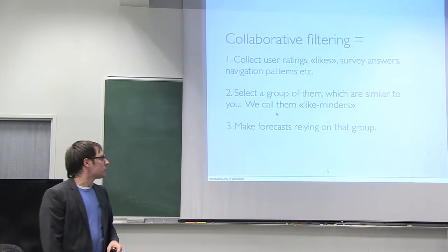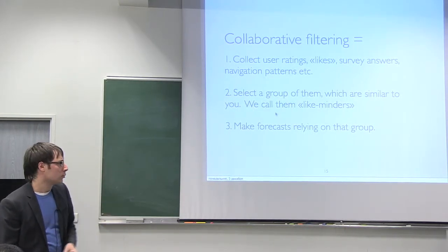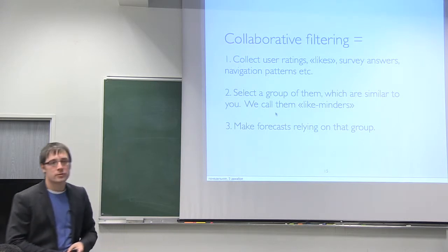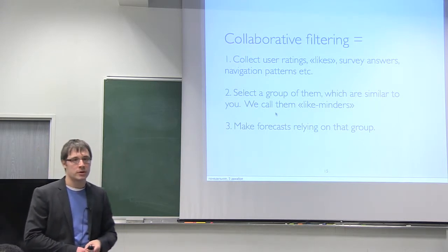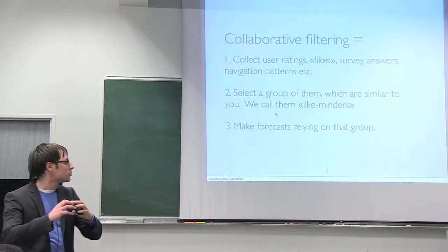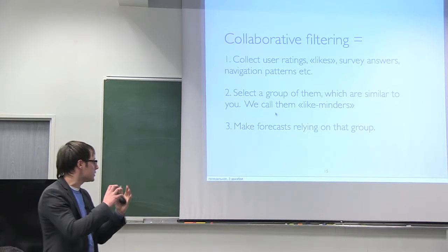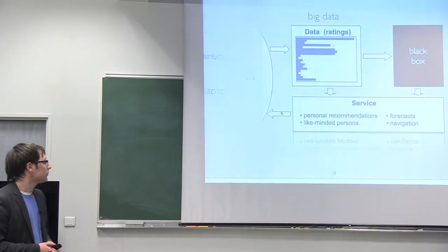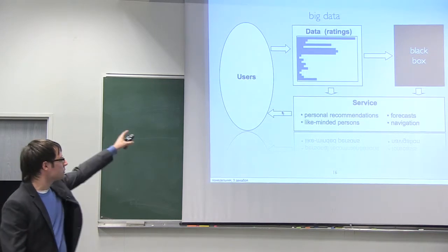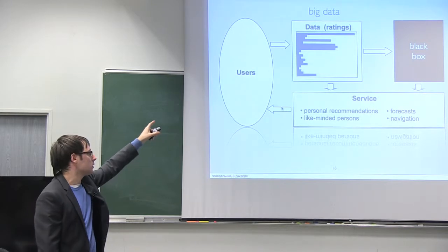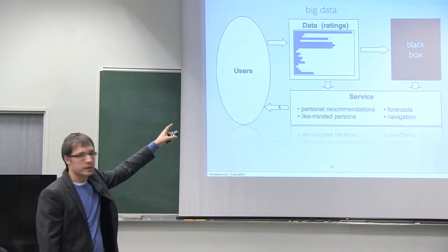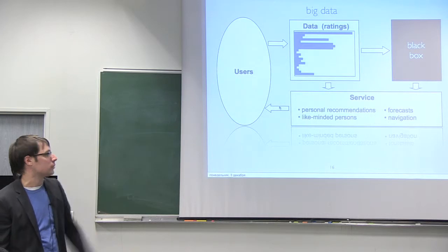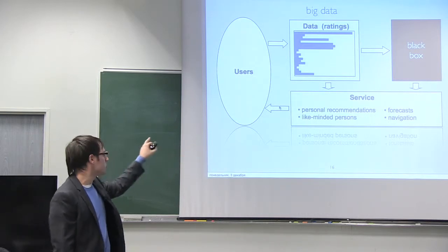How does it work? Inside all this technique lies collaborative filtering. What does it mean? It's very simple. Number one: collect the user ratings, user likes, answers from surveys, navigation patterns. Then select a group of users which have something in common, which are similar to particular users. Then make forecasts relying on that group of people. There's a scheme: users provide big data of user rates, millions of rates and navigation patterns. Then there's a black box which provides recommendations, does all the calculations and mathematics inside. Then there's a service which is provided to users.